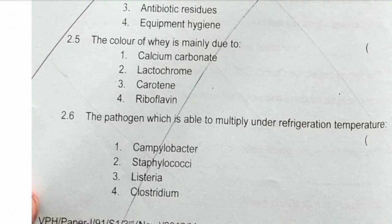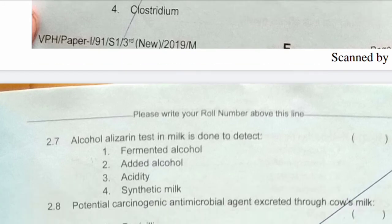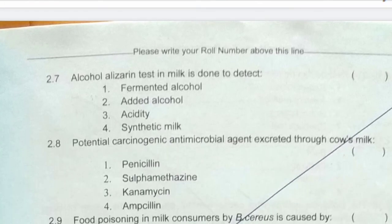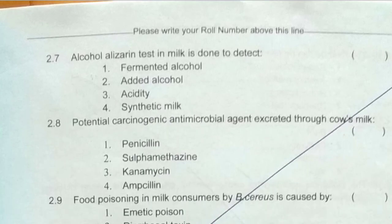Next question: the pathogen which is able to multiply under refrigeration temperature — the answer is the third option, Listeria. Next question: alcohol alizarin test in milk is done to detect — this test helps detect acidity, so the answer is the third option.